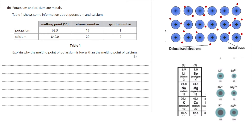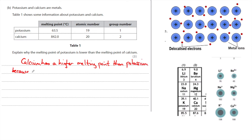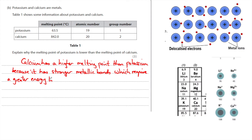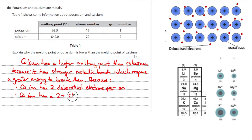Calcium is in group two, so it has two electrons on its outer shell and loses both in a metallic bond, giving two delocalized electrons per ion. The calcium ion has a 2+ charge, which means the electrostatic attraction between the delocalized electrons and the nucleus is stronger. Calcium has a higher melting point than potassium because it has stronger metallic bonds requiring greater energy to break, as the calcium ion has two delocalized electrons per ion and a 2+ charge compared to potassium's 1+ charge.